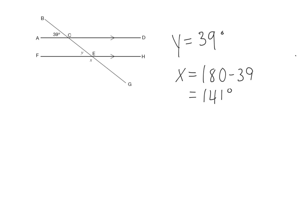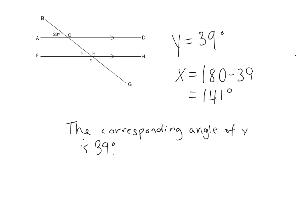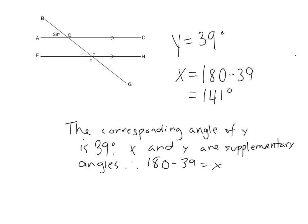Then to justify my answer, I would say the corresponding angle of y is 39 degrees. And then to find x, I would say x and y are supplementary, so x equals 180 minus 39, and x equals 141 degrees. And I would be done with this one.